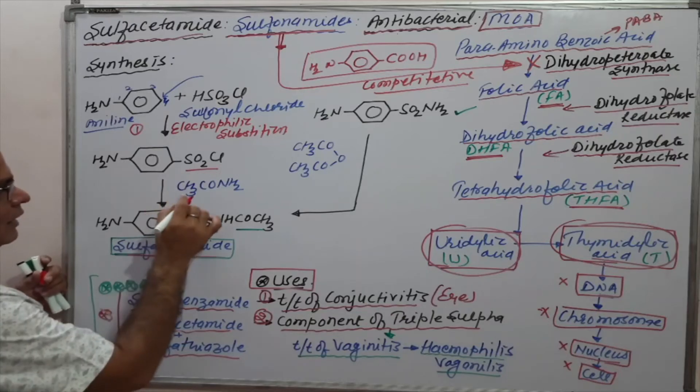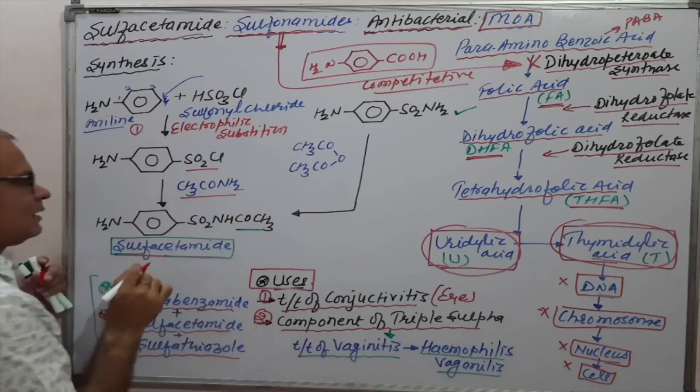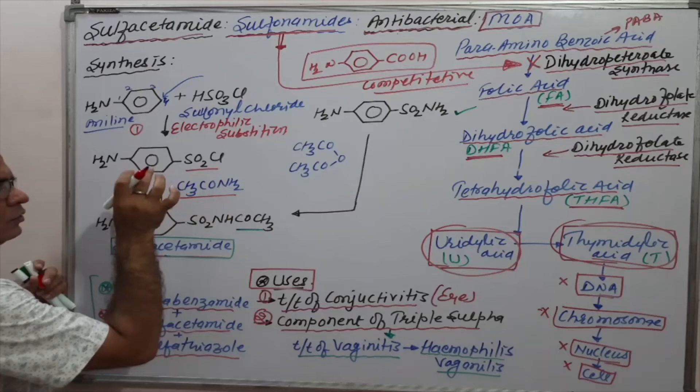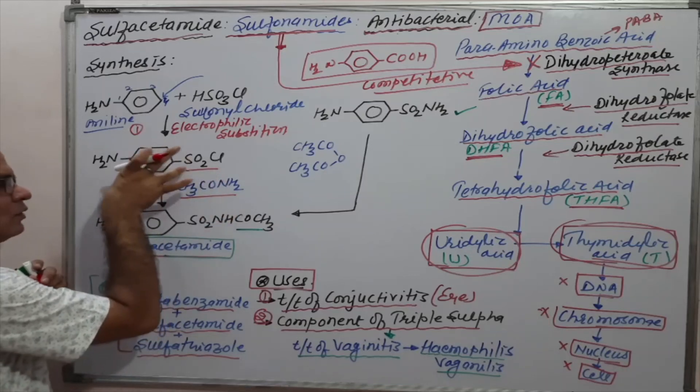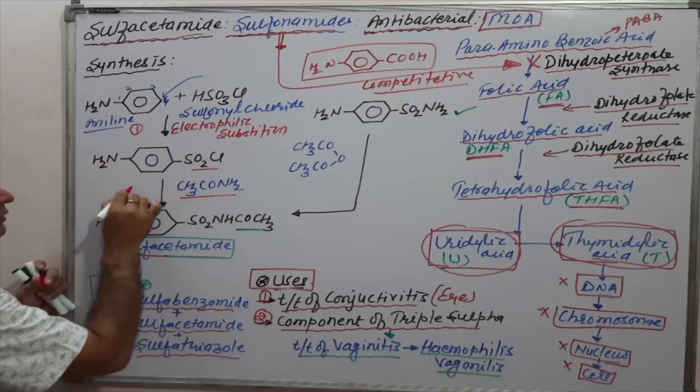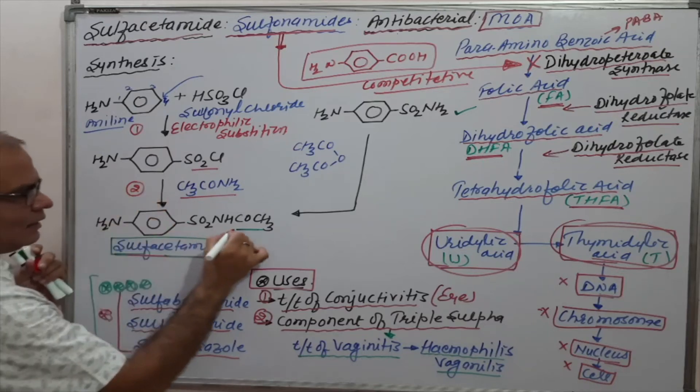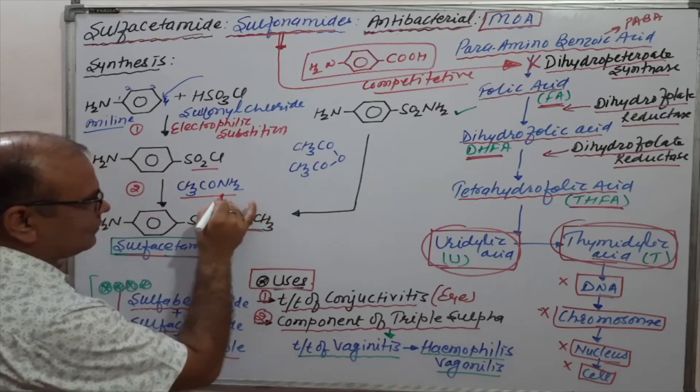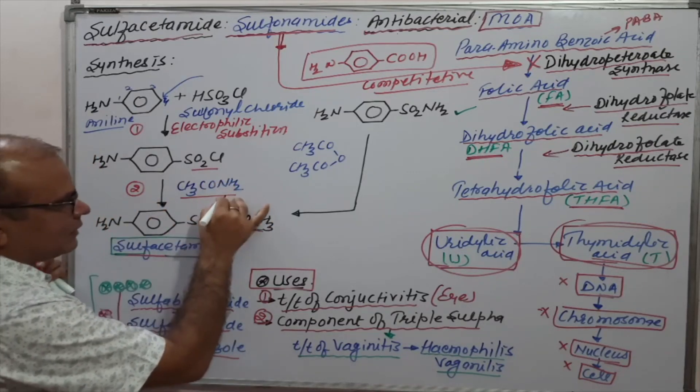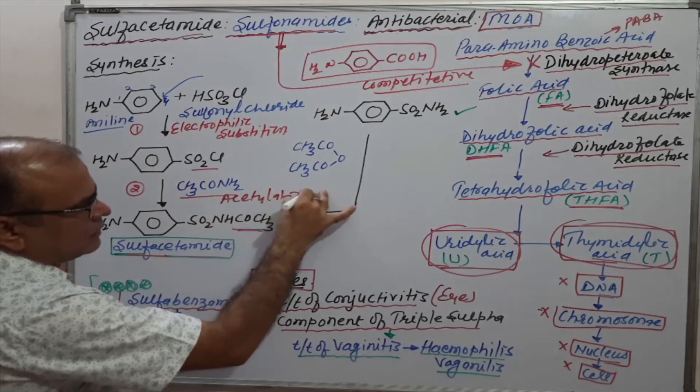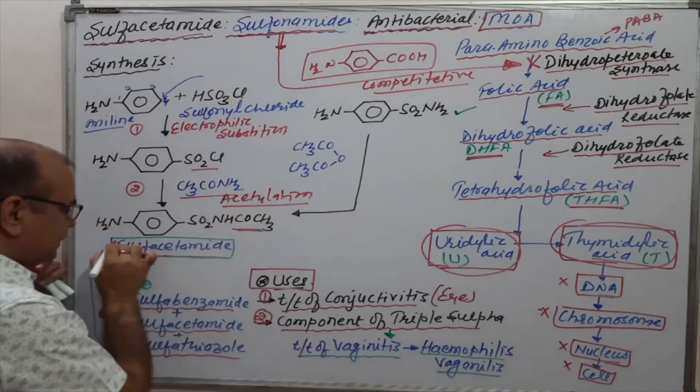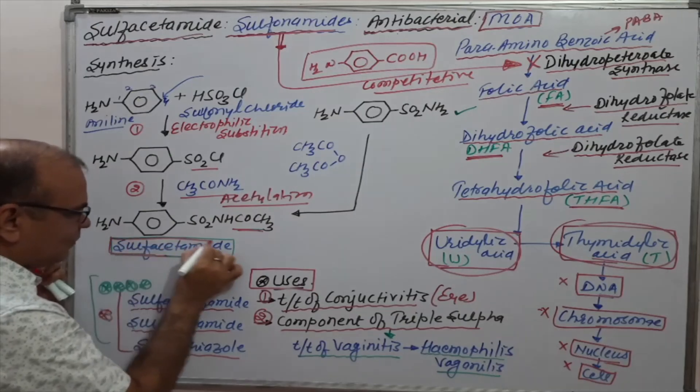SO2Cl will be introduced. At the same time, acetyl is used as a treatment for this intermediate. The second reaction is acetylation. This is the part of acetylation, which forms sulfacetamide. Very simple molecule.